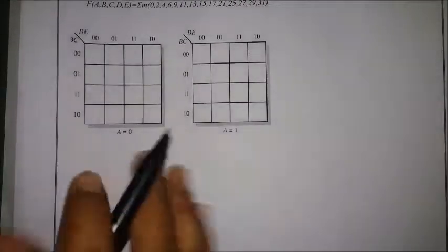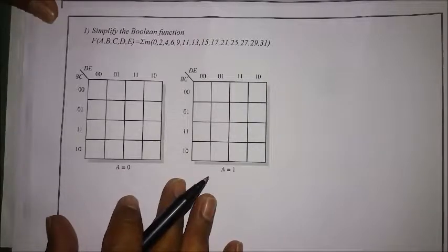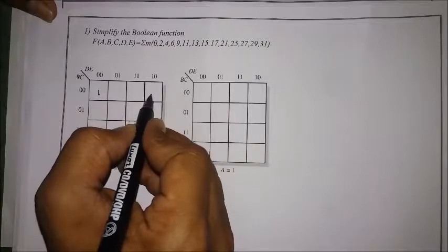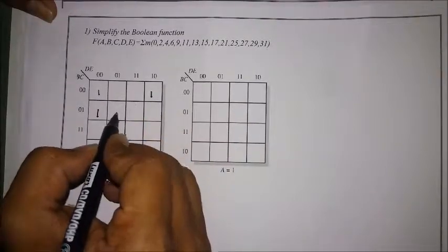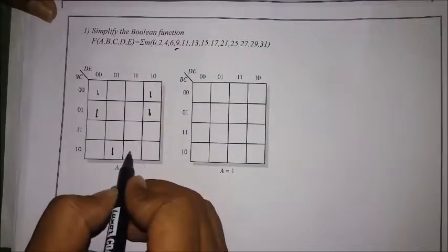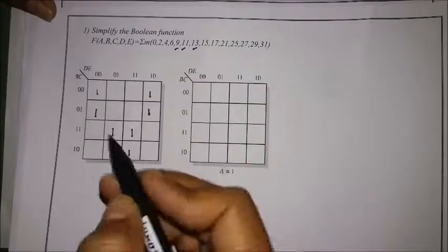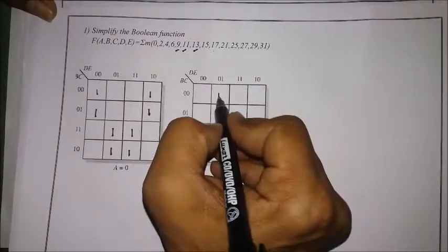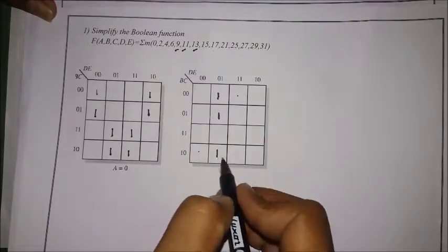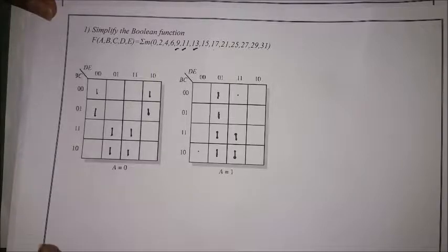Now let's solve a problem. We need to simplify a Boolean expression. I'll identify the cells and mark the ones. Starting with 0, then 1, 2, 3, 4, 5, 6, 7, then 8, 9, 10, 11, 12, 13, 14, 15. Then for a equals one: 16, 17, 18, 19, 20, 21, 22, 23, 24, 25, 26, 27, 28, 29, 30, 31. Now all ones are marked in the K-map.